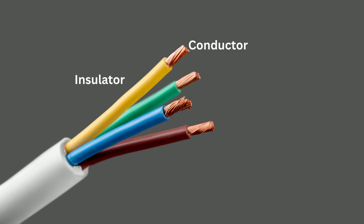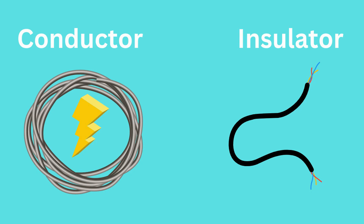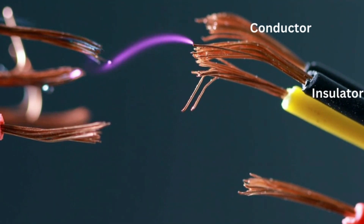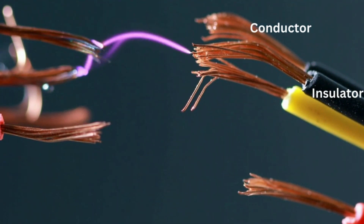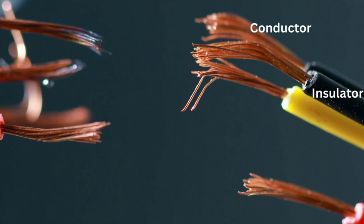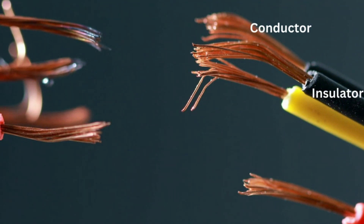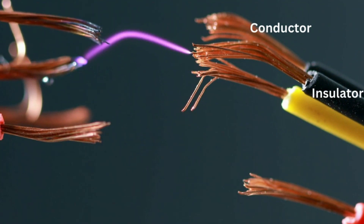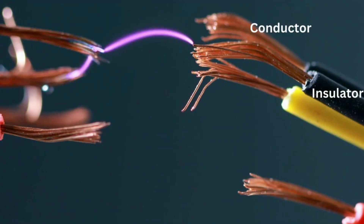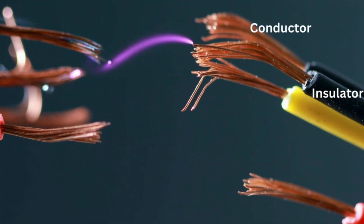You can summarize the difference between a conductor and an insulator by looking at an electric wire. On the inside of the wire, you find a metal like copper that allows the electrons to flow freely. On the outside, you will find plastic or rubber, which restricts the flow of electrons, and this protects you from the electric current.